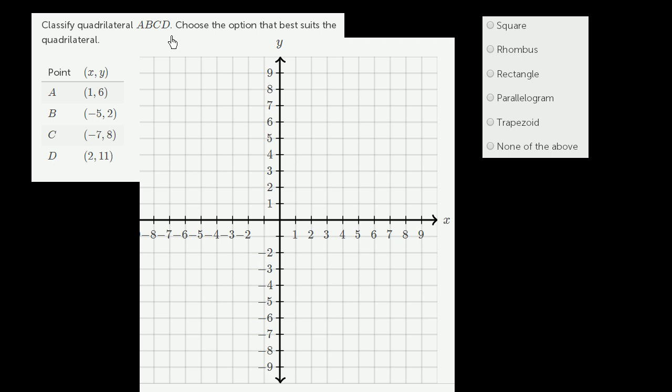Classify quadrilateral ABCD. Choose the option that best suits the quadrilateral. We're going to pick whether it's a square, rhombus, rectangle, parallelogram, trapezoid, or none of the above.